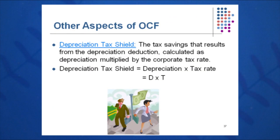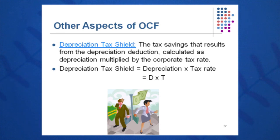The important fact here in one of these methods is the depreciation tax shield. Depreciation is a non-cash expense that acts as a tax shield, and the savings that result — the DTS — are savings that result from the depreciation deduction, which is simply D times T. You can quickly calculate the impact that depreciation has on your company by taking D times T.